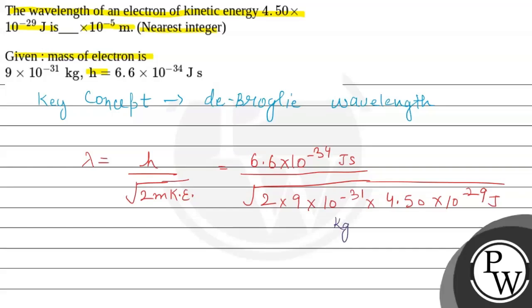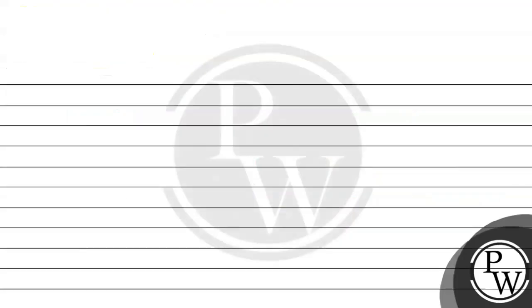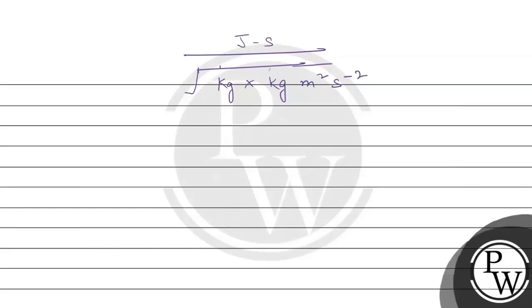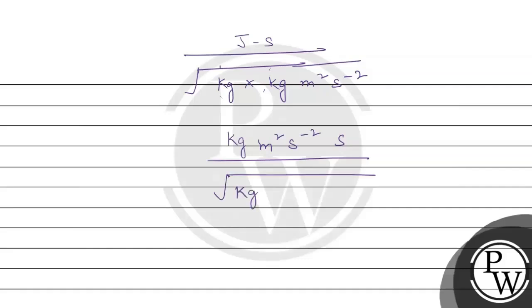First let's check the units. In the numerator we have joule·second. In the denominator under the root we have kilogram multiplied by joule. We can write joule as kg·m²/s², so we will write kilogram × kilogram·m²/s² under the root, giving kg²·m²/s² inside the square root.